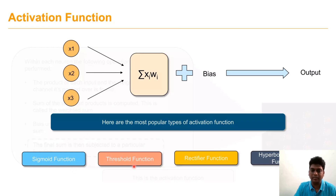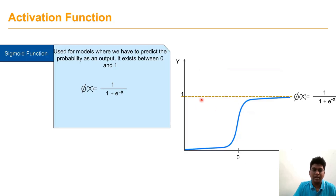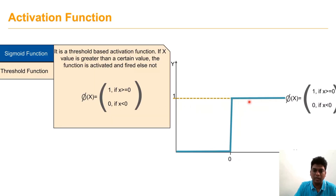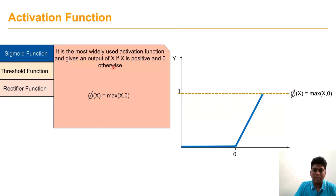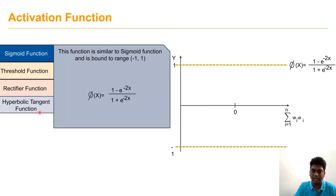The main types of activation functions are: sigmoid, threshold, rectified linear unit, and hyperbolic tangent function. The sigmoid function predicts probability as output between 0 and 1, defined as σ(x) = 1 / (1 + e^(−x)). The threshold function assigns 1 if the value is greater than the threshold, otherwise 0. The rectifier function outputs the positive value or 0 otherwise. The hyperbolic tangent function is similar to sigmoid but ranges from −1 to 1, defined as (1 − e^(−2x)) / (1 + e^(−2x)).